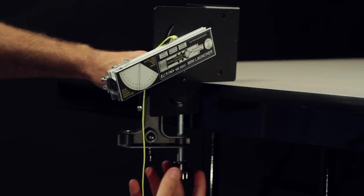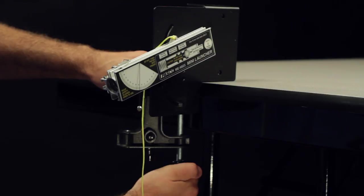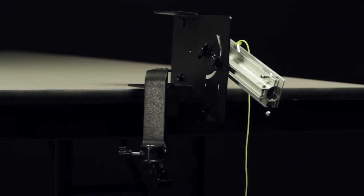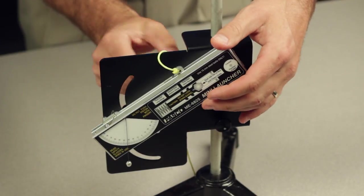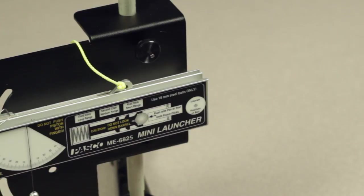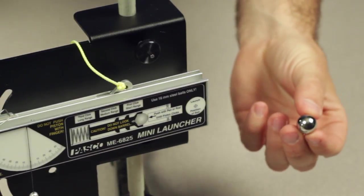The only additional equipment required to use the Mini Launcher is a C-clamp or other table clamp for clamping the launcher base to a table. The launcher has three range settings that are approximately 0.5m, 1.0m, and 2.0m at a launch angle of 45 degrees.